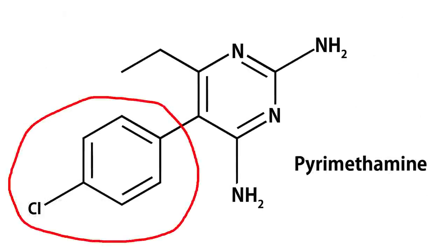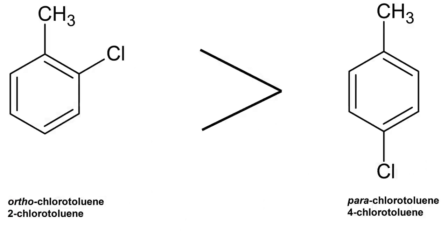To make pyrimethanine we want para-chlorotoluene. Unfortunately the two methods I've shown produce ortho-chlorotoluene as a major product.